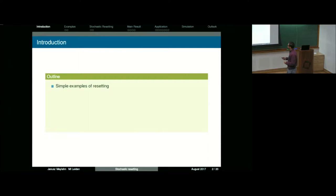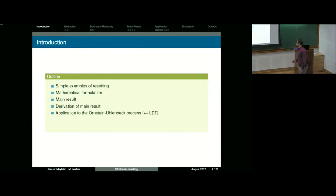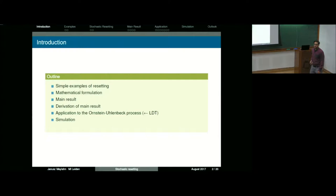I want to start off by giving some simple examples of where this might be relevant — how this idea can be applied in nature or elsewhere. Then I will define what exactly it is I'm speaking about. I'll state the main result, which is quite a nice simple formula, and say a couple of words on the derivation. Then we will apply it to the Ornstein-Uhlenbeck process, which is where the large deviations will come about. Finally, I'll show a simulation that verifies the results and end with some questions for future work.